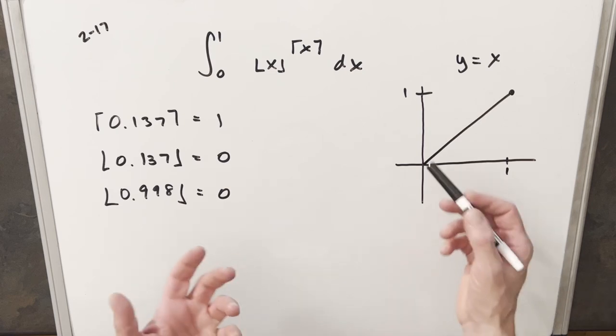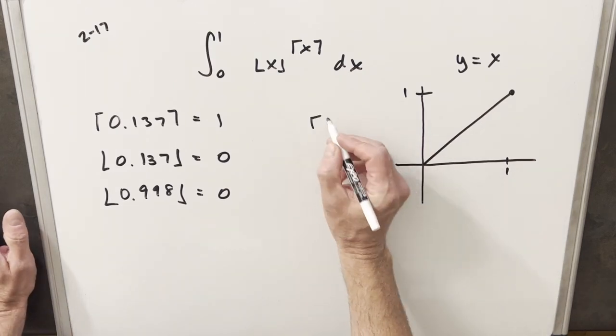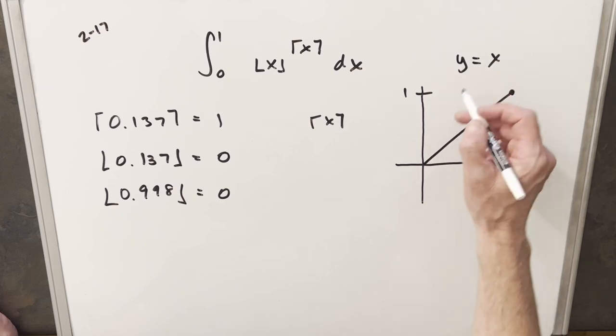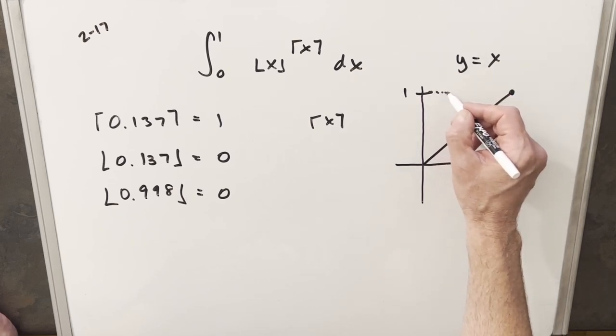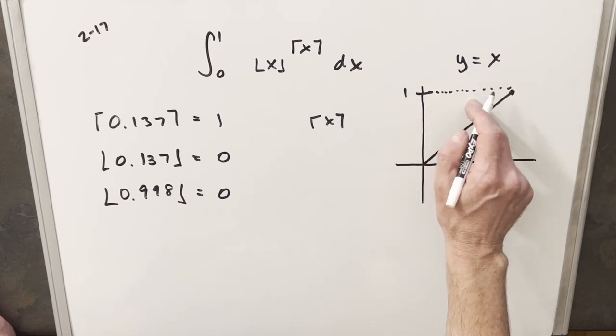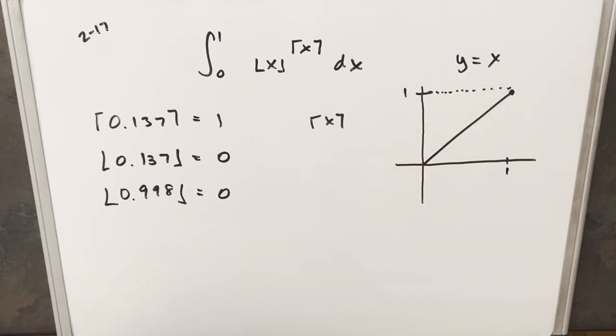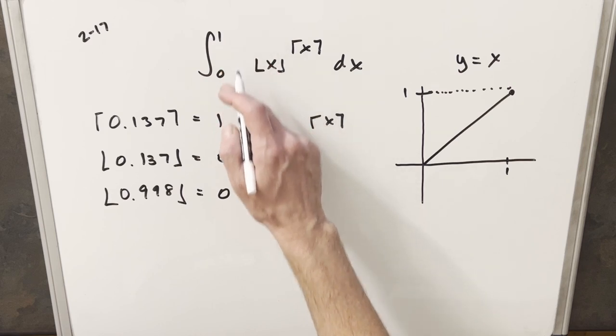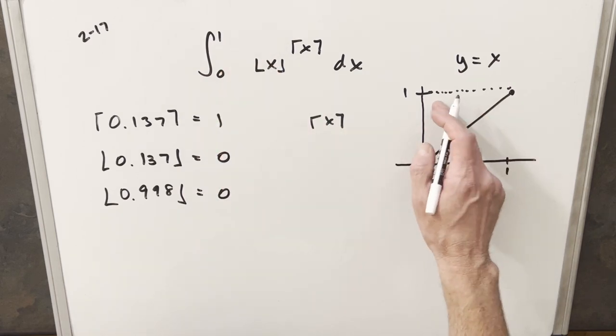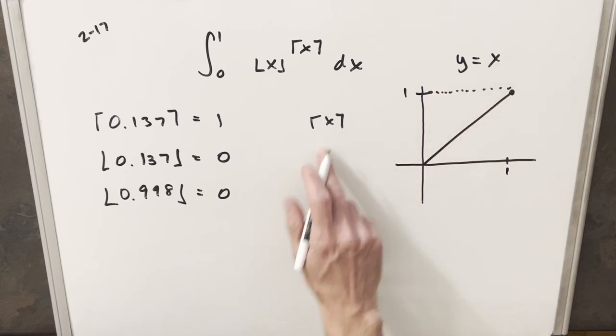Coming back to our graph, if I look at the ceiling of x in this range from 0 to 1, all these values will be rounded up. So the ceiling of x is just a line here with everything having a value of 1. Because it's an integral, we're not really concerned with the endpoints, just everything in between.